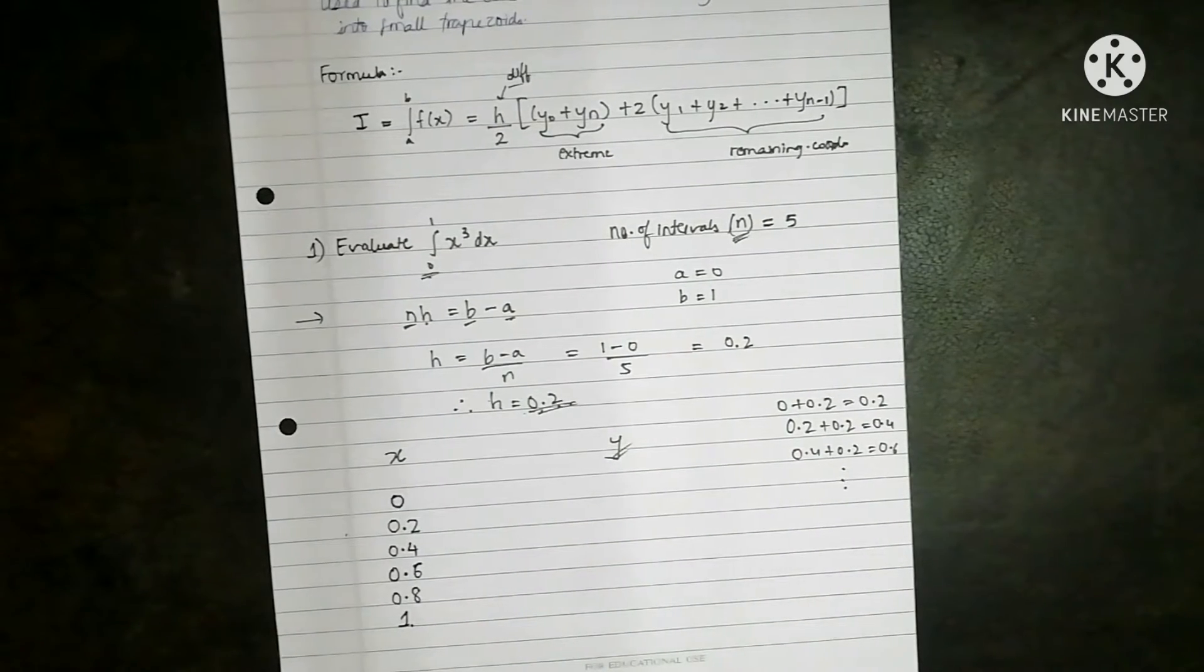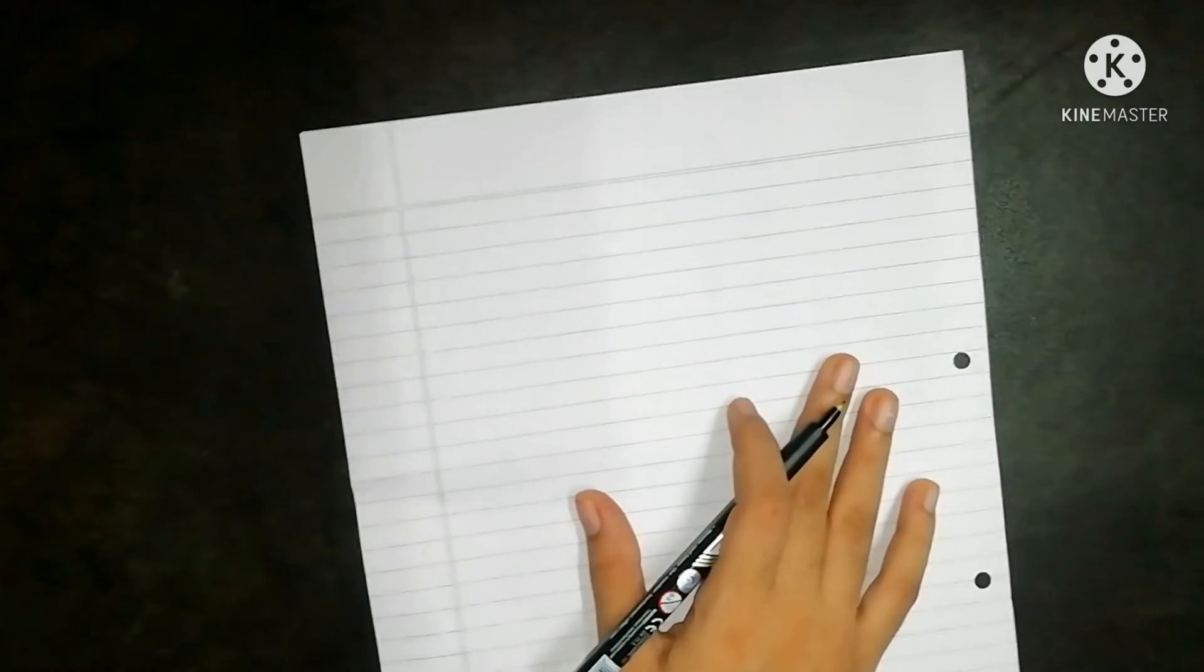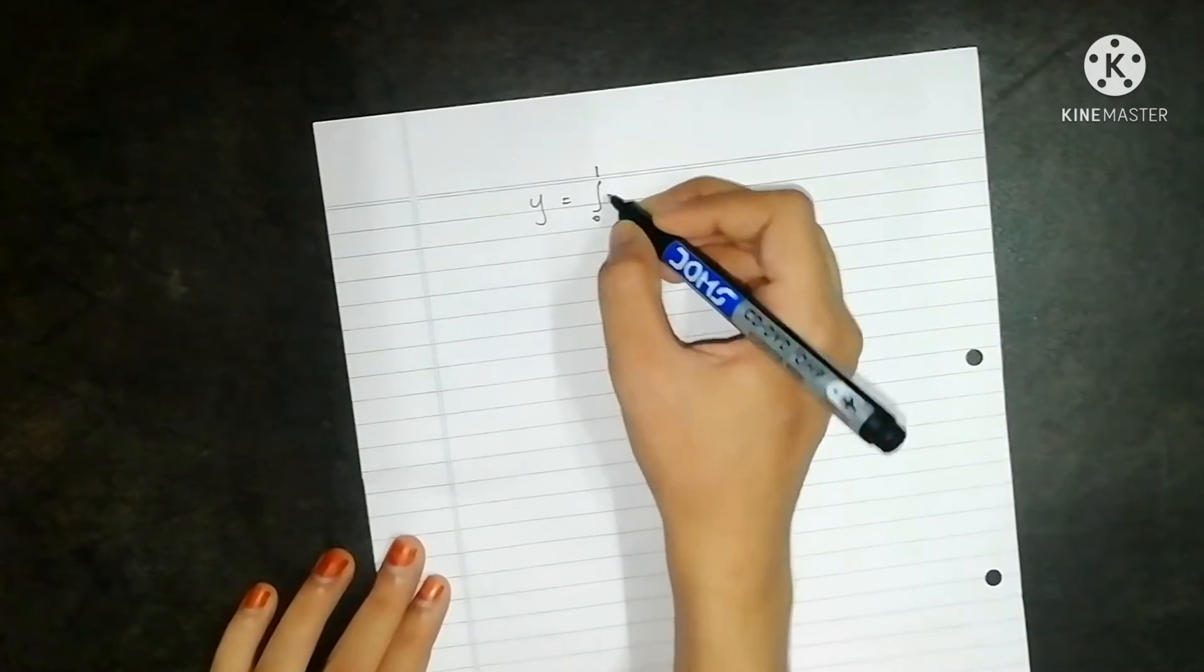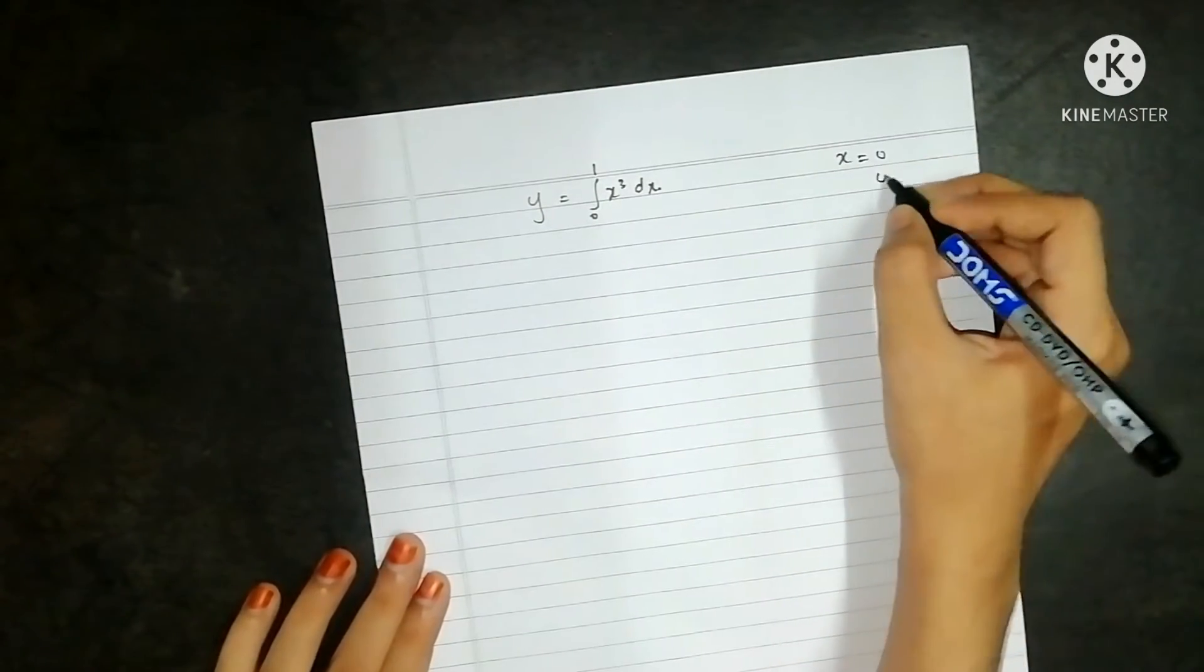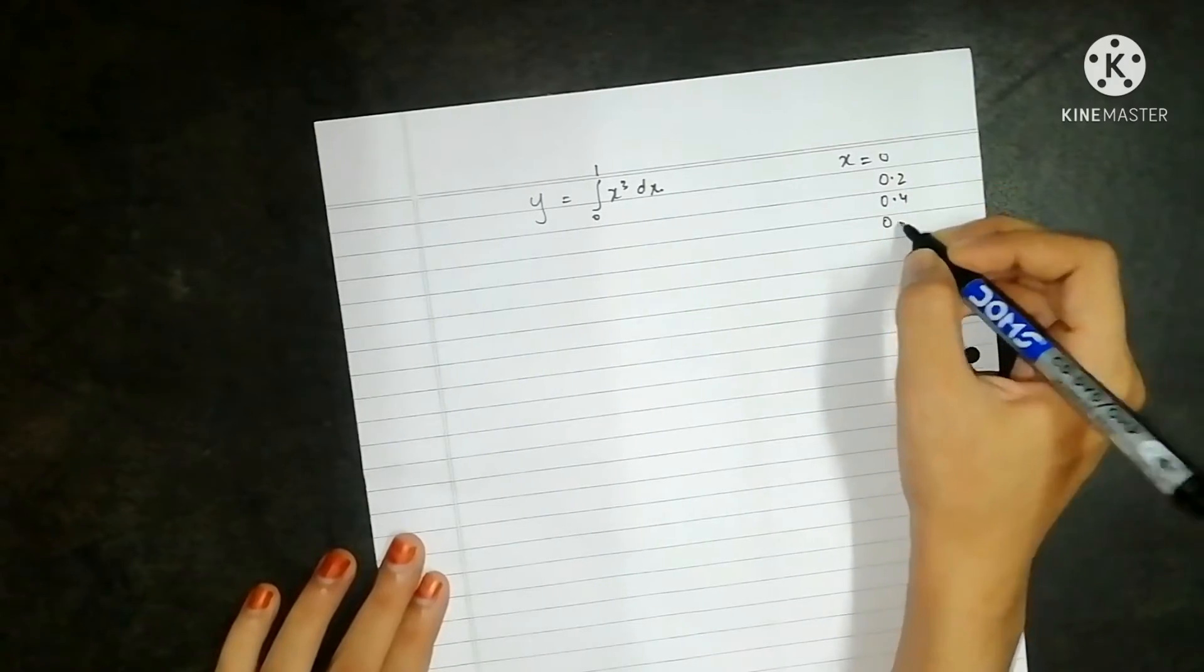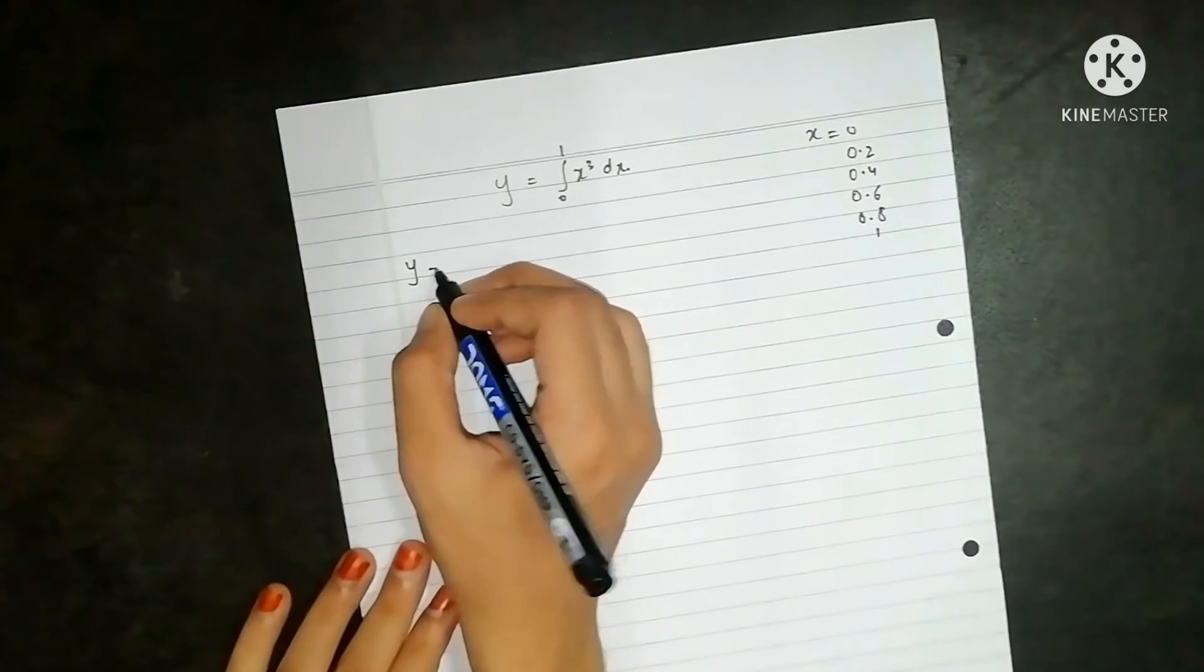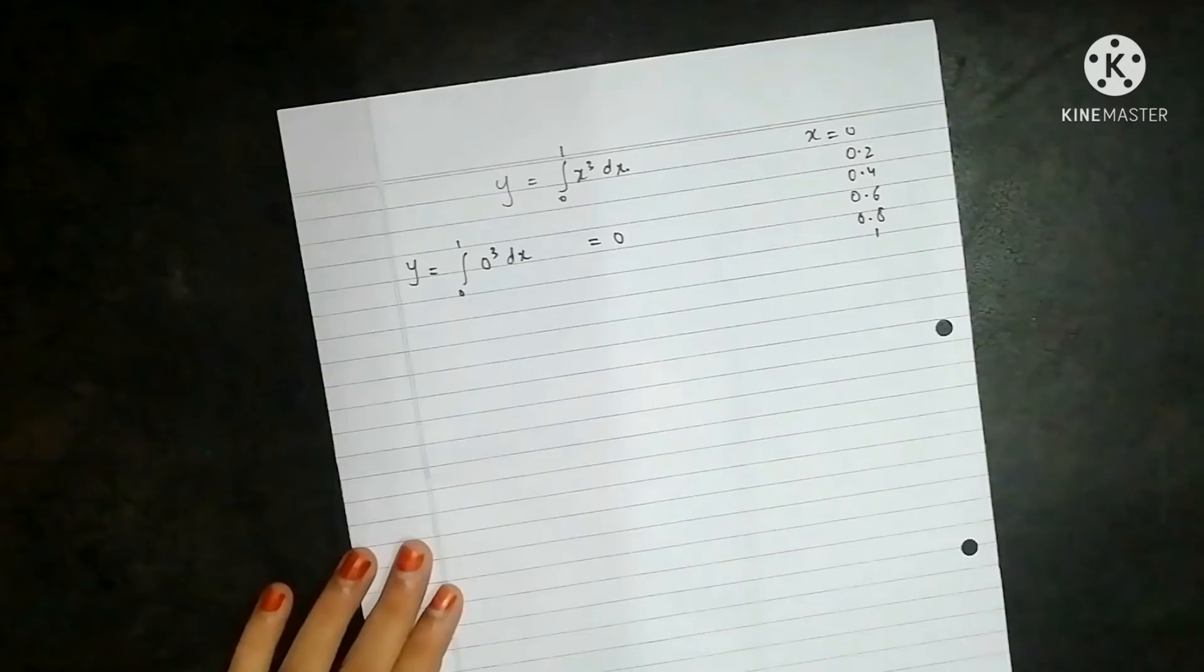And now we are held with the responsibility of finding y. So y is equal to 0 to 1 x cubed dx. We have x as 0, 0.2, 0.4, 0.6, 0.8 and 1. So substitute 0 to 1 of 0 cubed dx, we will get the value 0.